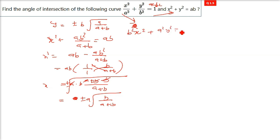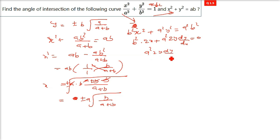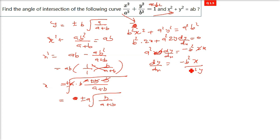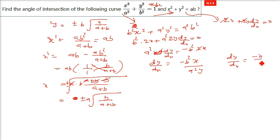Differentiating b²x² + a²y² = a²b²: we get 2b²x + 2a²y·(dy/dx) = 0. Cancelling the 2s, dy/dx = -b²x/(a²y). This is the slope m1 for the first curve. For the second curve x² + y² = ab: differentiating gives 2x + 2y·(dy/dx) = 0, so dy/dx = -x/y. This is slope m2 for the second curve.